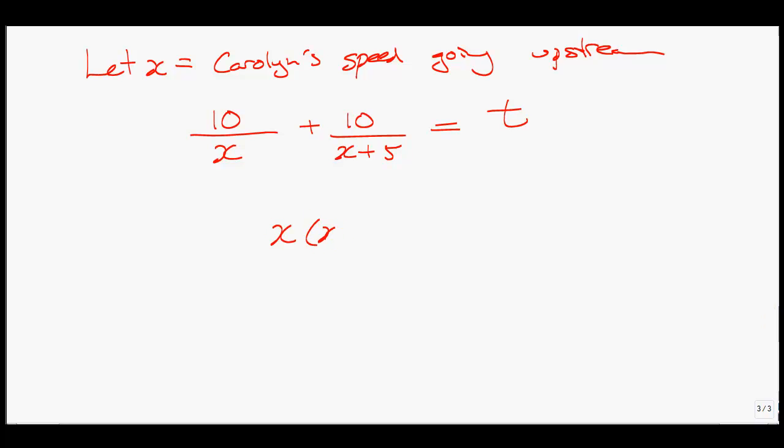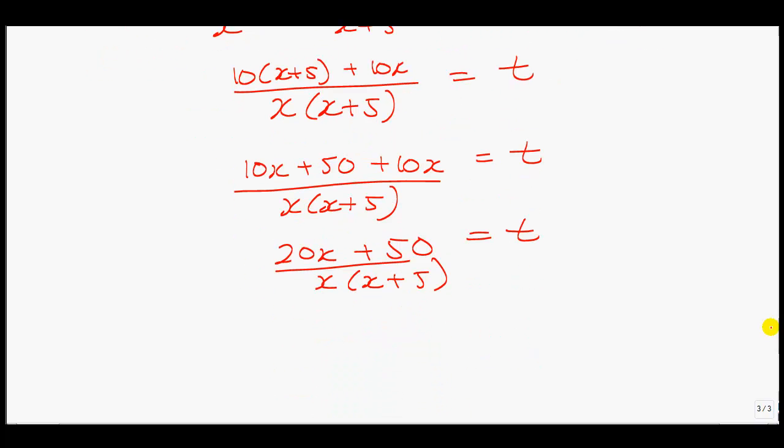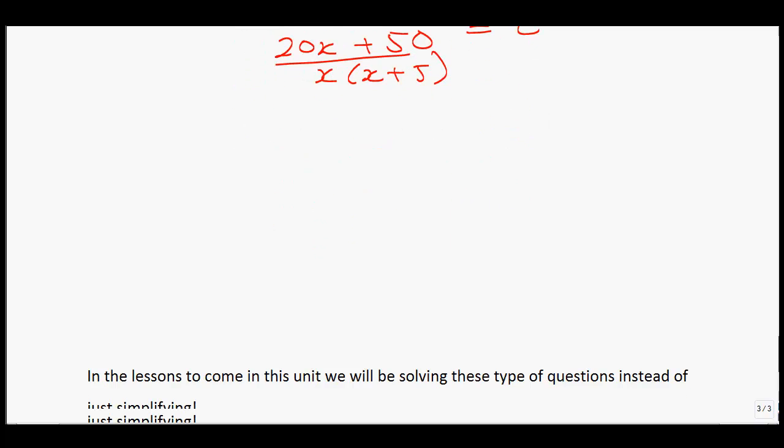When we simplify this expression, we notice that the common denominator we have is x all multiplied by x plus 5. You basically multiply the terms of what they're missing. This x is missing an x plus 5, and this 10 is missing an x. Gathering my like terms, we have 10x plus 50 plus 10x. This gives you 20x plus 50 all over x times x plus 5.